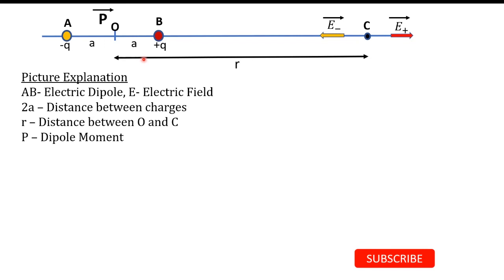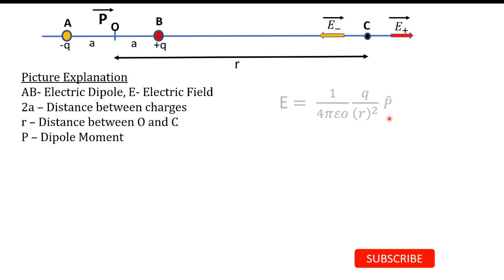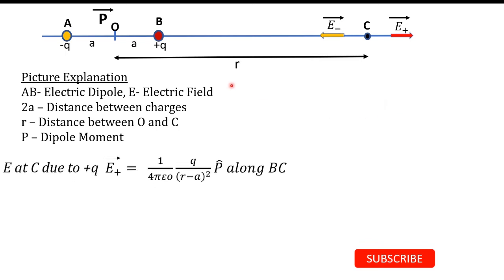Now we must find the electric field induced due to the charges plus q and minus q. We know that the electric field is 1/(4πε₀) × q/r² × unit vector. The electric field at C due to plus q, E-plus, equals 1/(4πε₀) × q/(r−a)² × p-hat. This field is along the direction BC, because a positive charge produces a field that points outward.